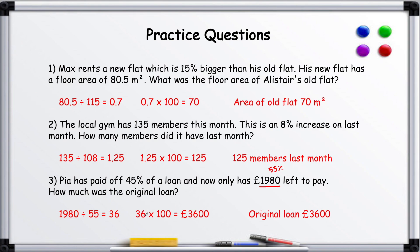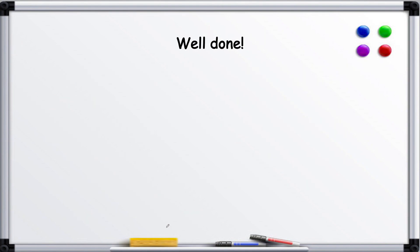So to get our 1%, we divide by 55, which gives us £36. Then we times that 36 by 100 to give us £3,600 - that's the original value of the loan. I've been Mr. Maths. Please like and subscribe.